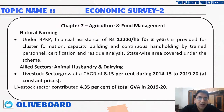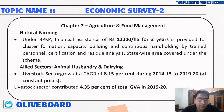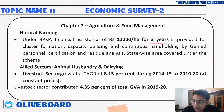Regarding natural farming, under the BPKP scheme, financial assistance of rupees 12,200 per hectare for three years has been provided for cluster formation, capacity building, and continuous handholding.